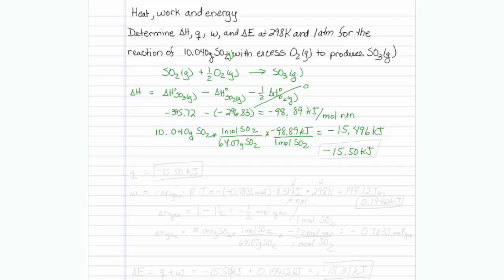The next question is pretty easy. It's asking for Q, and that's actually the same number, minus 15.50 kilojoules. Because Q is actually delta H, the heat change under constant pressure.